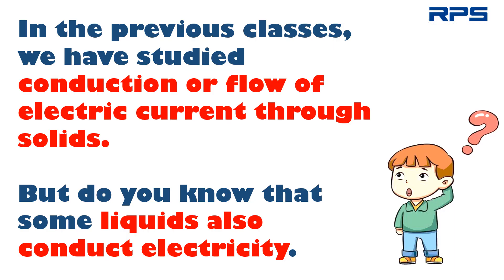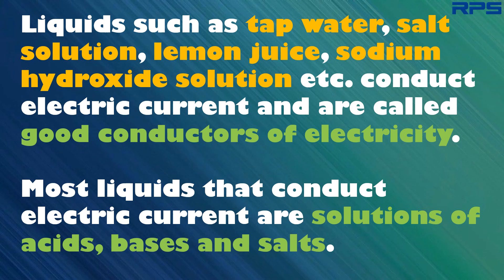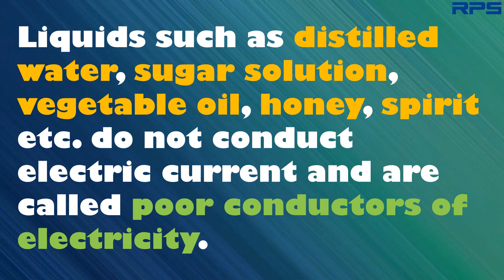In the previous classes, we have studied conduction or flow of electric current through solids. But do you know that some liquids also conduct electricity? Liquids such as tap water, salt solution, lemon juice, and sodium hydroxide solution conduct electric current and are called good conductors of electricity. Most liquids that conduct electric current are solutions of acids, bases, and salts. Liquids such as distilled water, sugar solution, vegetable oil, honey, and spirit do not conduct electric current and are called poor conductors of electricity.